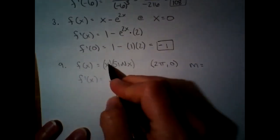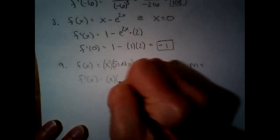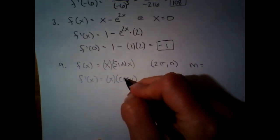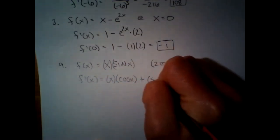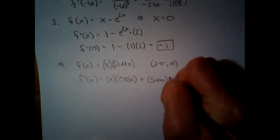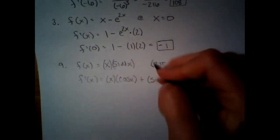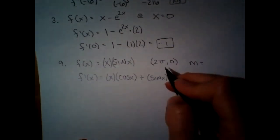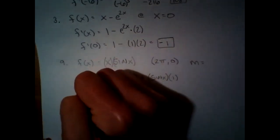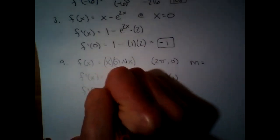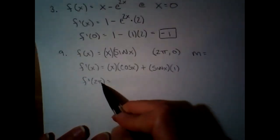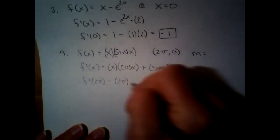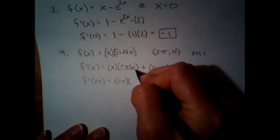It will be the first function, x, times the derivative of the second — derivative of sine is cosine — plus the second function times the derivative of the first, and derivative of x would just be one. We're going to plug 2π into that to get our slope. If I plug in 2π for x, this first part is just going to be 2π, and then we're going to have to do cosine of 2π.